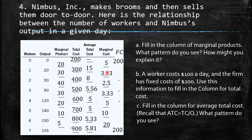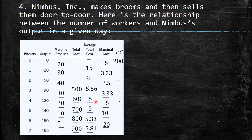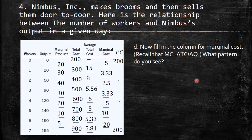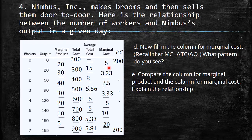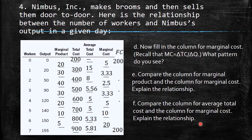The marginal cost also shows a pattern: it first decreases because of increasing marginal product, then increases due to diminishing marginal product. The relationship with average total cost: when marginal cost is below ATC, ATC is falling; when they are equal, ATC is at its minimum; when marginal cost is above ATC, ATC is rising.